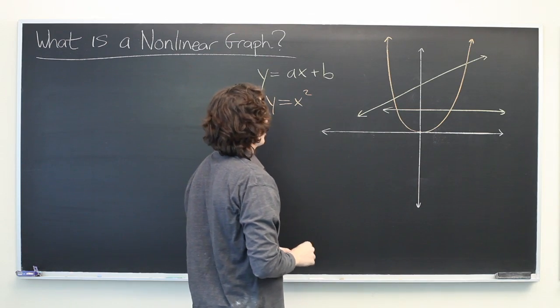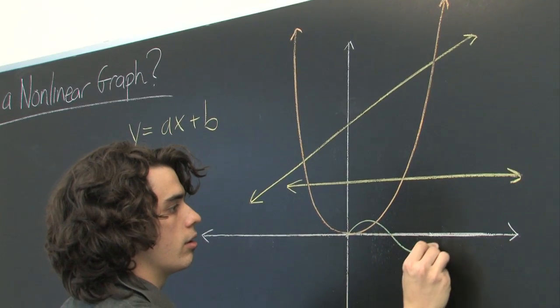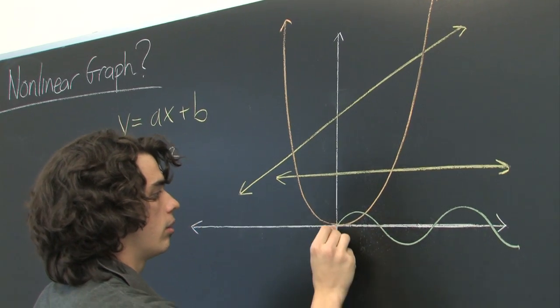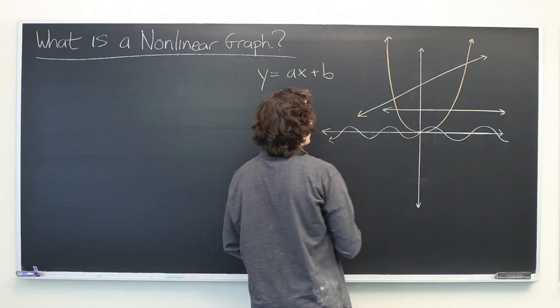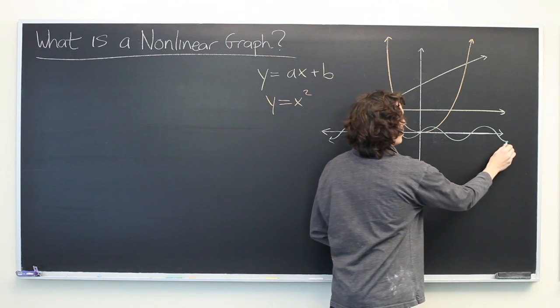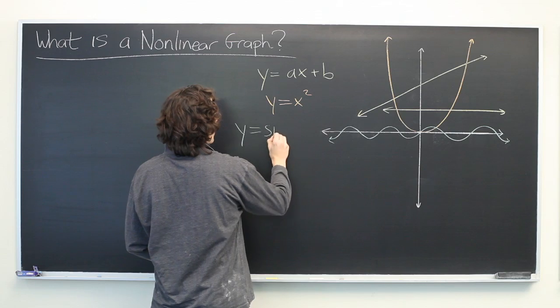We can also have things that are slightly more exotic. For example, this curve. You may recognize this as a trigonometric curve. This is sine of x.